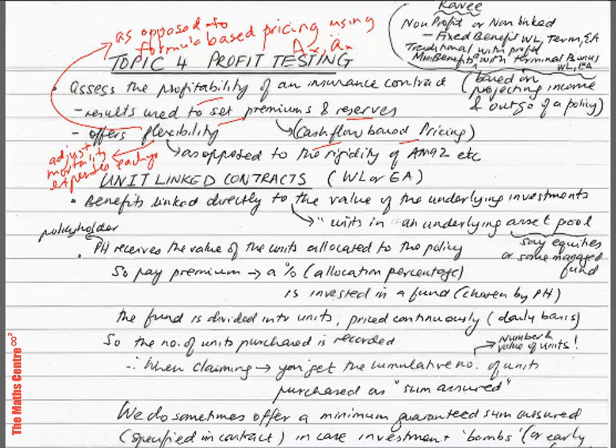What it does is offer us flexibility — flexibility in the sense that we can adjust mortality and expenses each year, as opposed to formula-based pricing using actuarial values such as A_x and ä_x, which we obtain from tables like AM92.